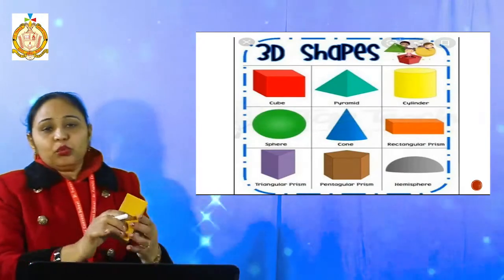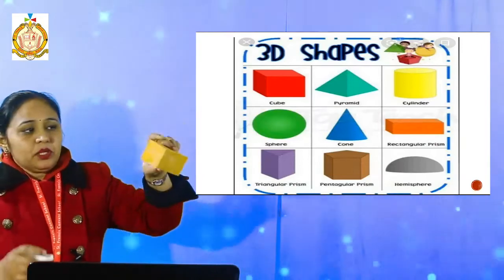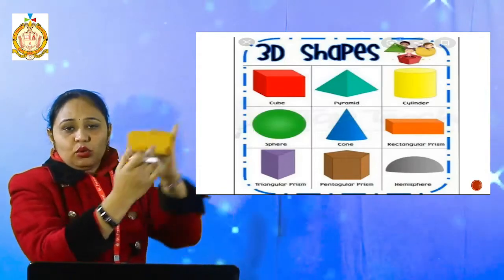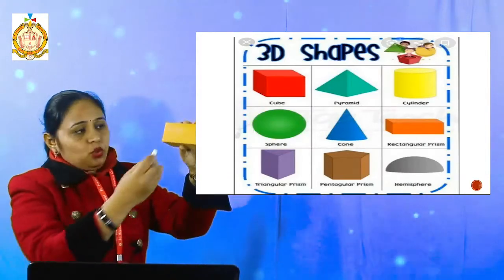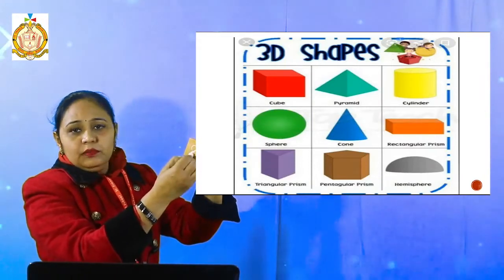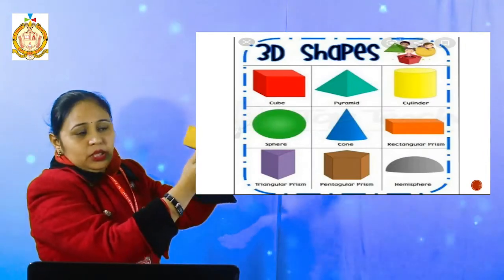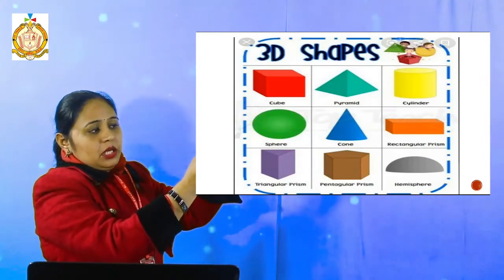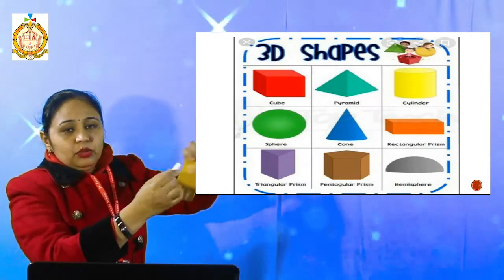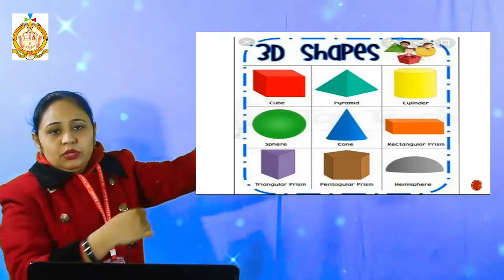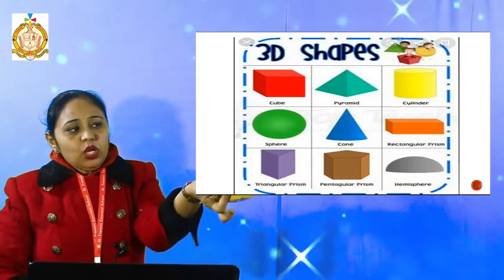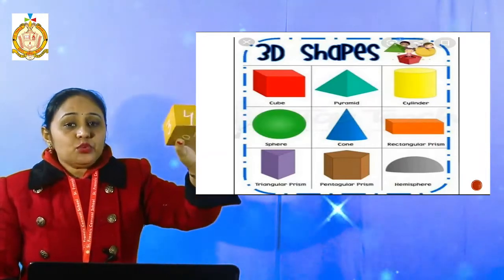Now I am going to explain the faces. Now where are the faces? This is the flat surface of this one — that means this is our face of this cuboid. I start to count: there is the first face, then the second, then the third, then the fourth — four are there, but two more are there. This is the fifth one and this is the sixth one. That means it has six faces.